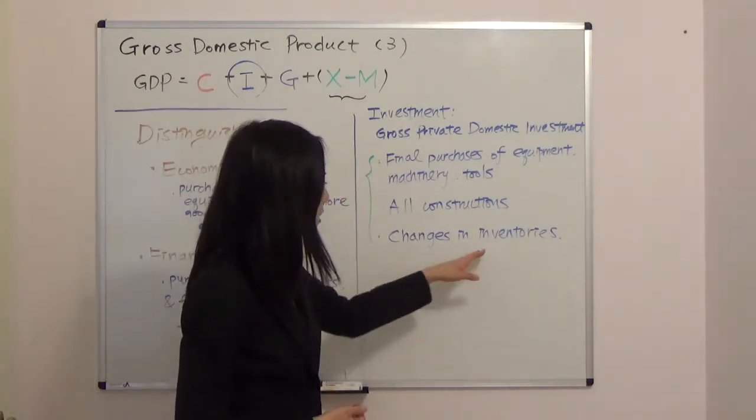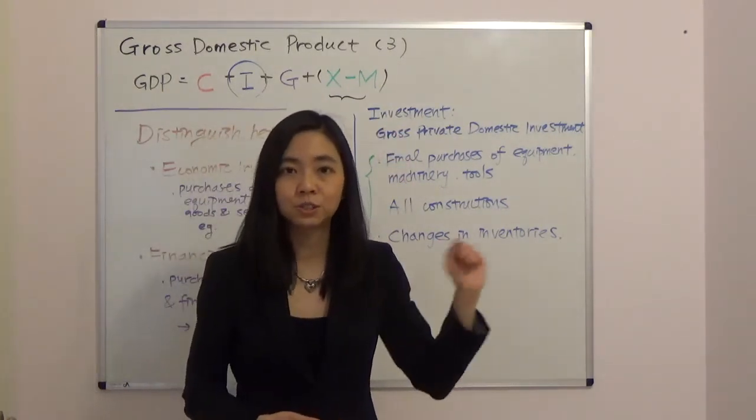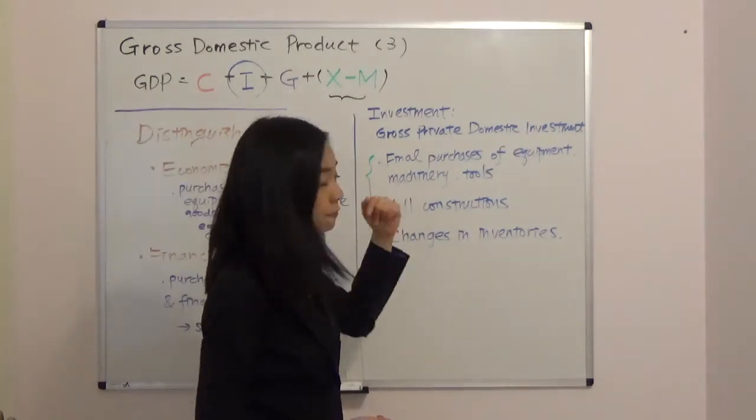And the last component is changes in inventories. So if your inventory goes up, then that adds to investment. But if your inventory goes down, then that's subtracted from the investment.